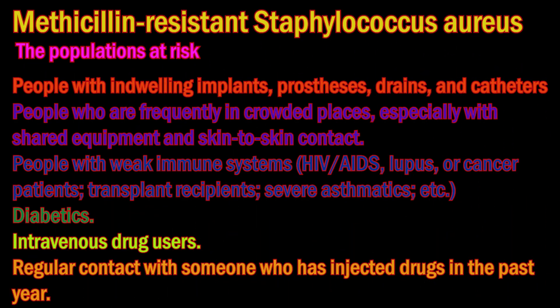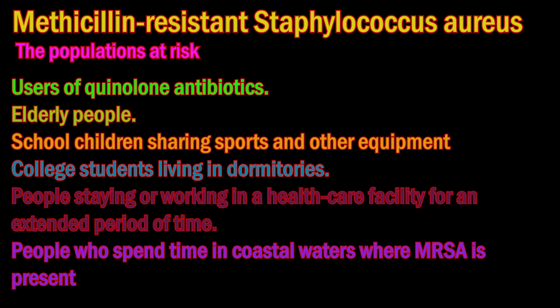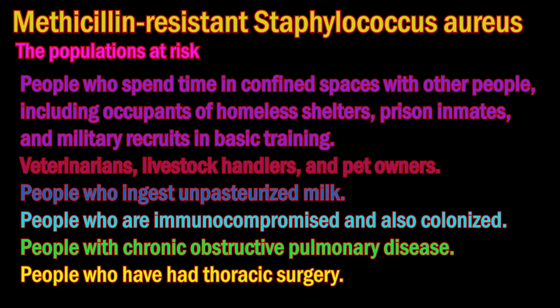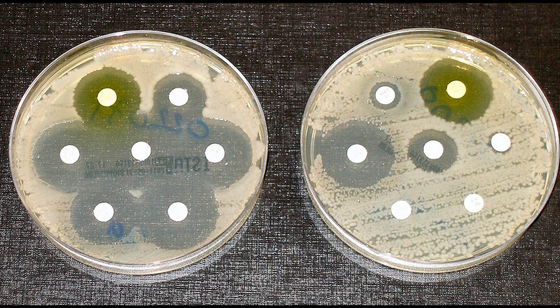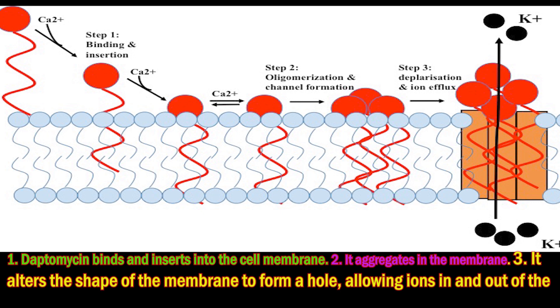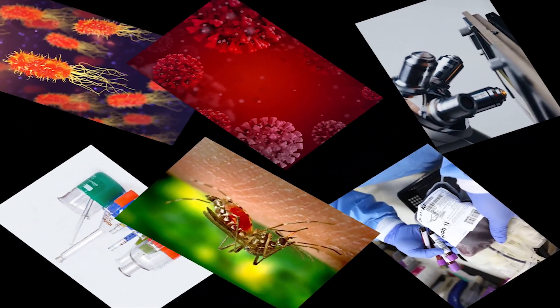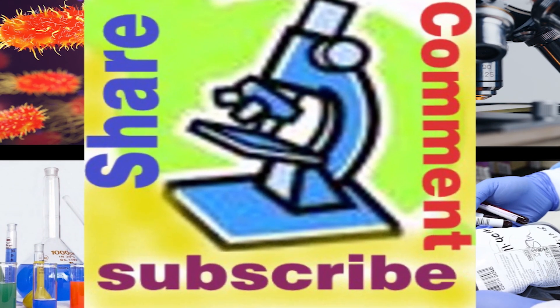MRSA infection is common in hospitals, nursing home patients with open wounds, invasive devices such as catheters, and immunocompromised patients. Vancomycin and teicoplanin are glycopeptide antibiotics used to treat MRSA infections. Vancomycin-resistant Staphylococcus aureus (VRSA) are strains that have acquired resistance to the glycopeptide antibiotic vancomycin. For people with MRSA bacteremia in the setting of vancomycin failure, high-dose daptomycin in combination with other agents is normally used to treat.